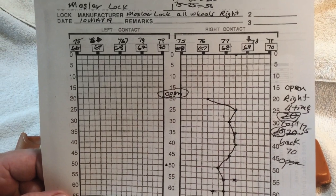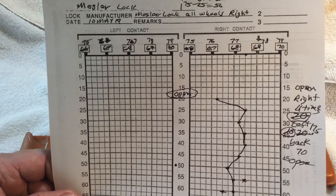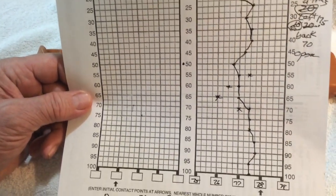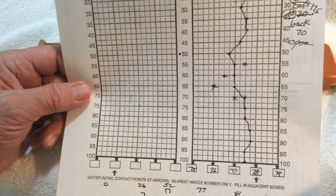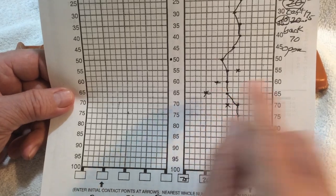But we started running every five, I think it was. So we started down here at 100. All wheels right, and we turn back to the left because that's where you find the right contact point, and we went down through here.